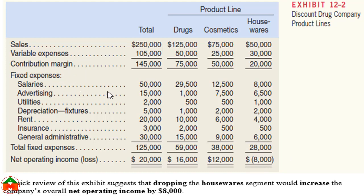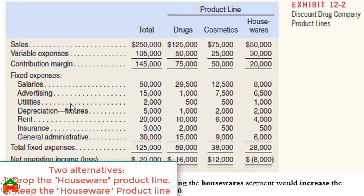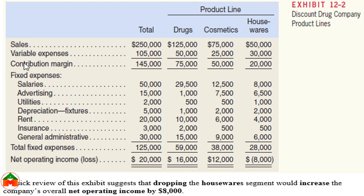As a manager, since the Housewares product is generating losses, you have two alternatives: drop the product or keep the product. Before making this decision, we have to consider which costs are relevant and which are irrelevant. The relevant costs and benefits include sales as the benefit, and variable expenses and fixed expenses as the costs.